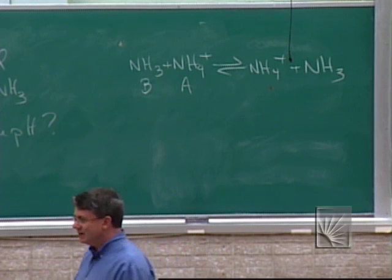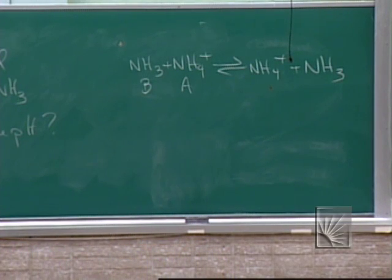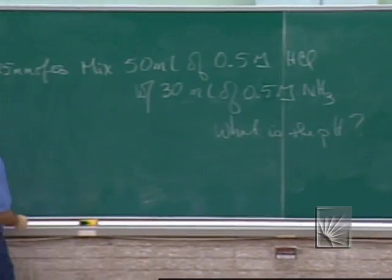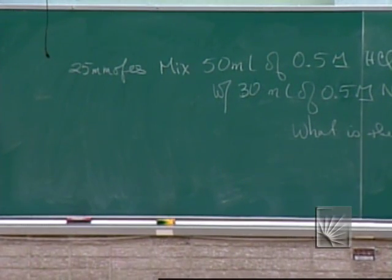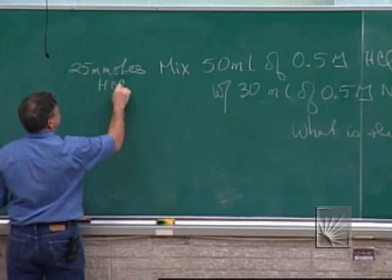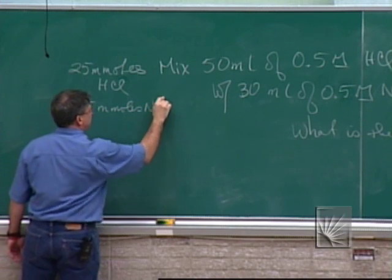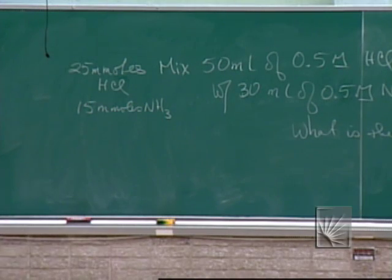If it's a limiting reactant problem, then you should be saying, oh, that means I need to know moles. I've got 50 milliliters of 0.5 molar HCl — that tells me I've got 25 millimoles. 50 times 0.5 is 25, yes. I have 25 millimoles of HCl and I have 15 millimoles of ammonia.